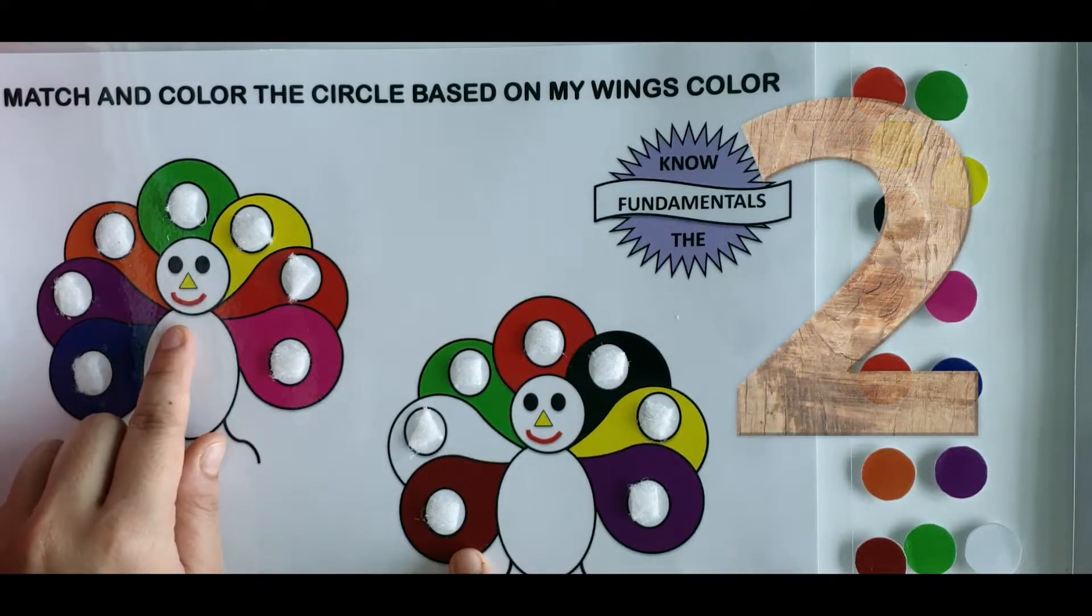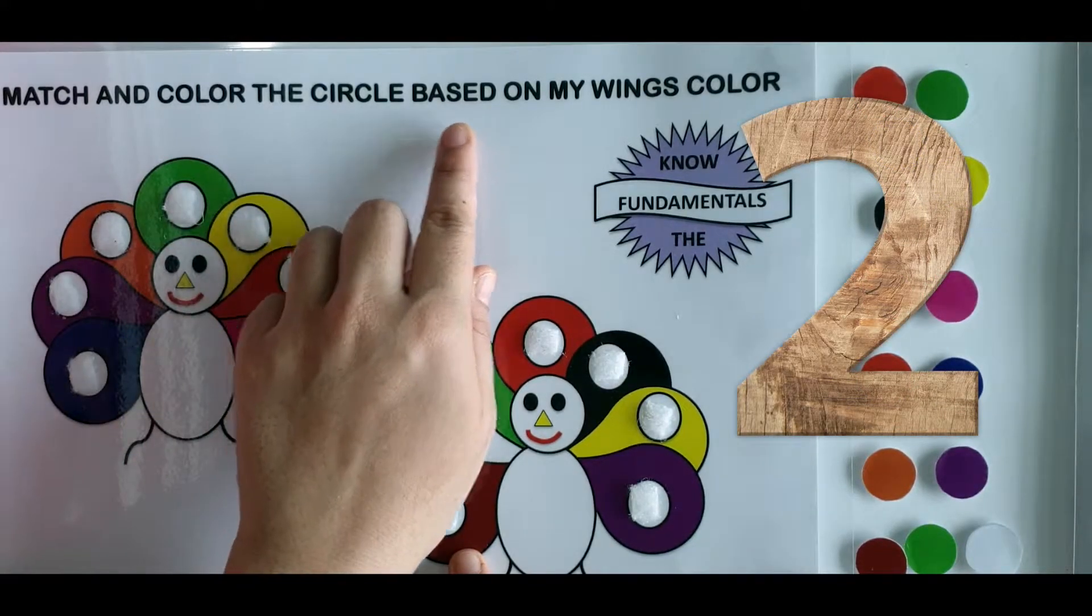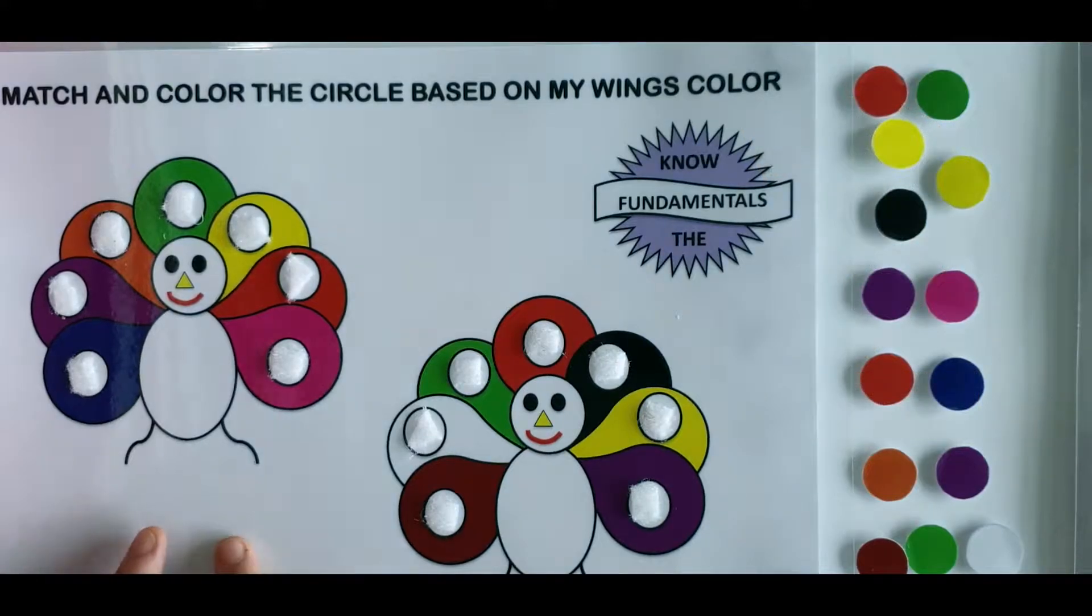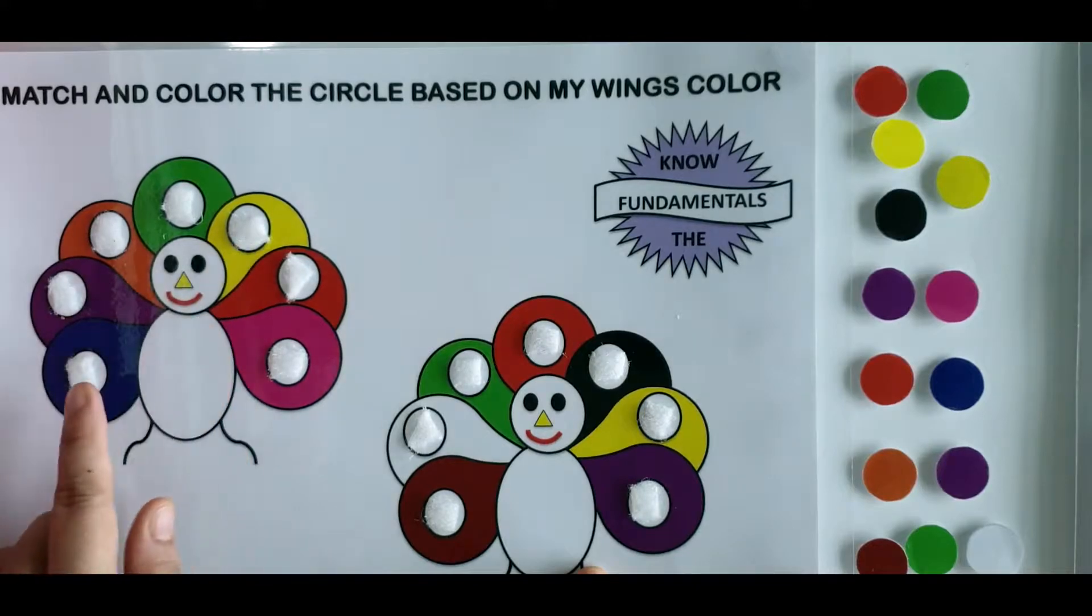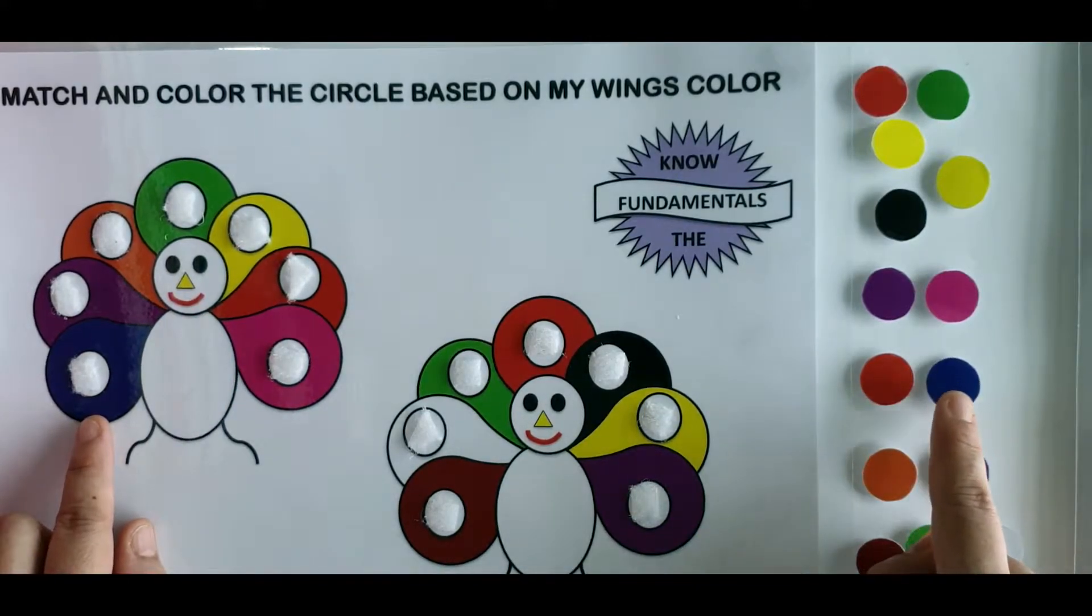So this is activity number two. Match and color the circle based on my wings. So kids will see the birds and it has different colors of wings. So they will match the colors accordingly.